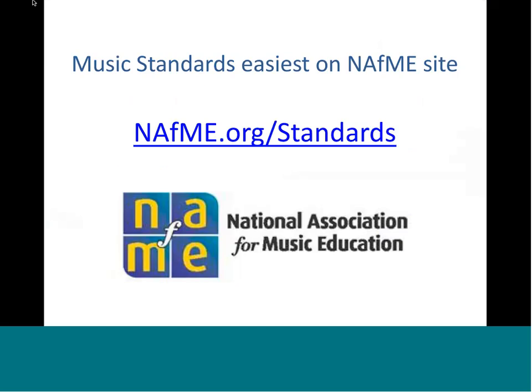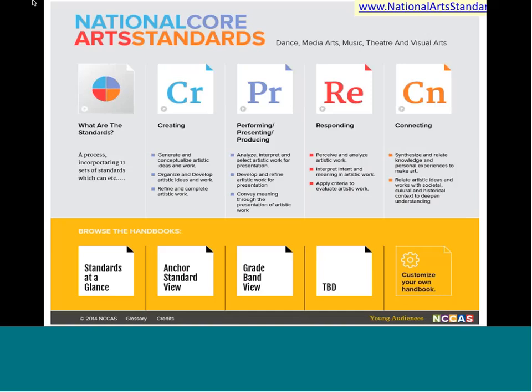So where do you find the standards? I recommend music people go first to nafme.org/standards, because the way we've organized the standards on that page is probably maximally useful for curriculum development purposes. For the other art forms, you can go to nationalartstandards.org, which gives you a number of options to manipulate the standards, download them, or create your own customized handbook — you can focus on grade levels or strands you're particularly interested in.